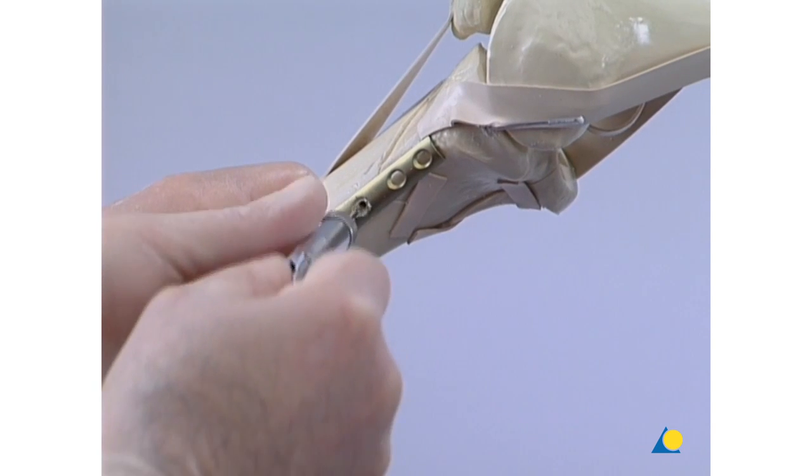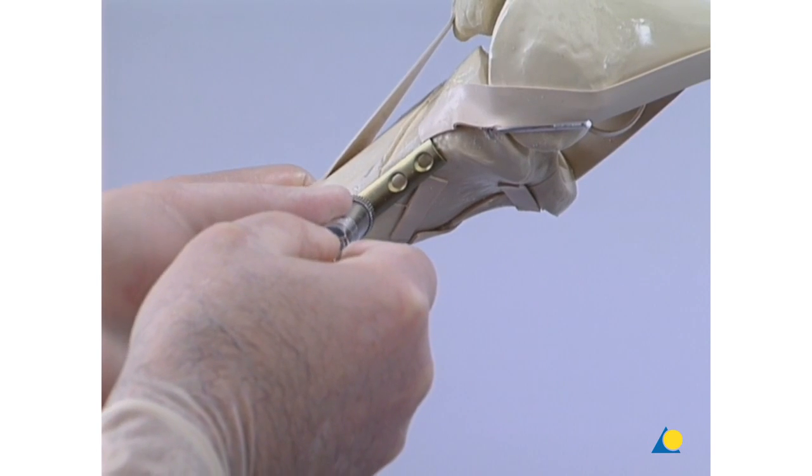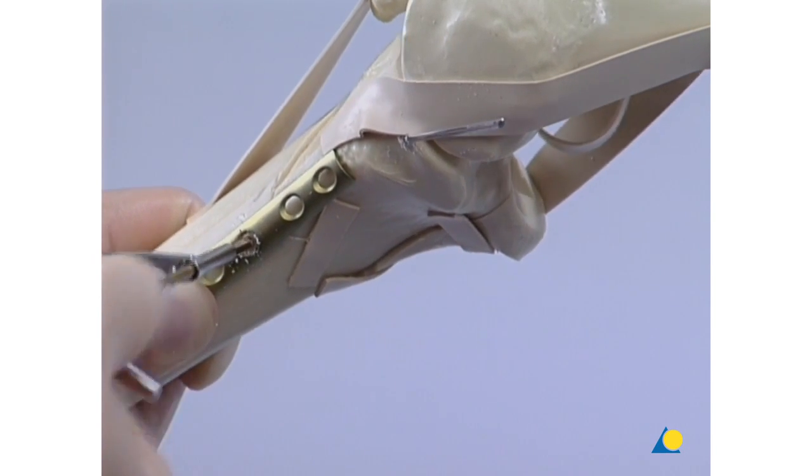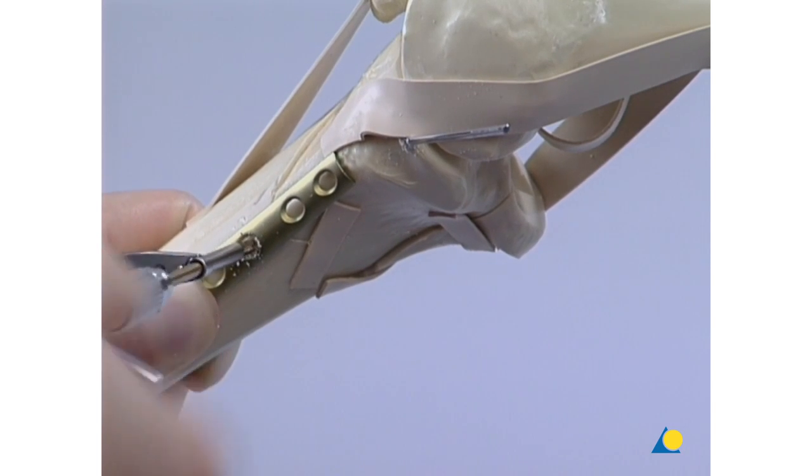A depth gauge is used to measure. A 3.5-millimeter tap and corresponding sleeve are used to cut the threads.